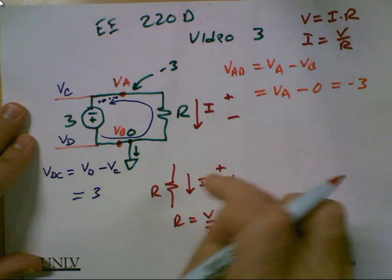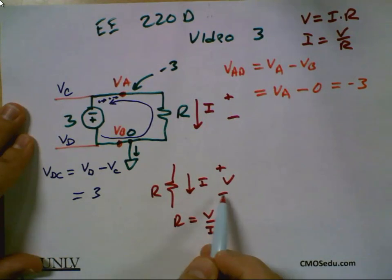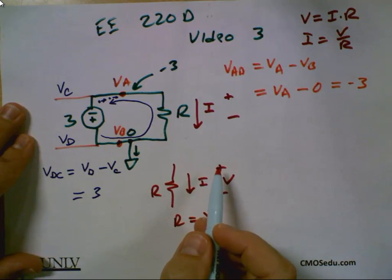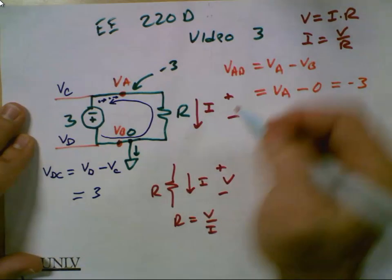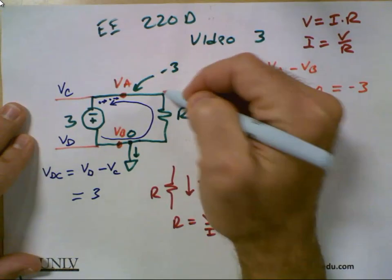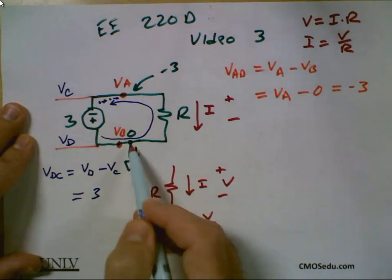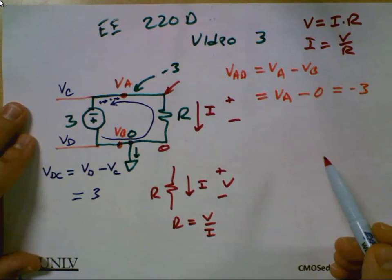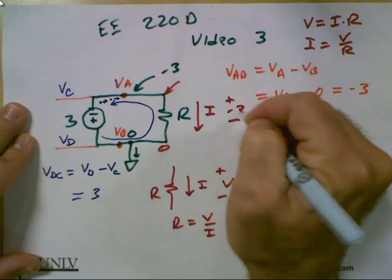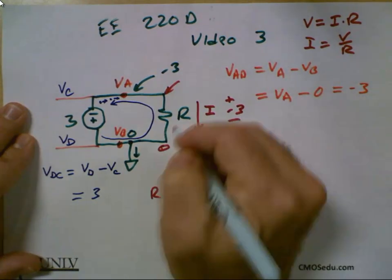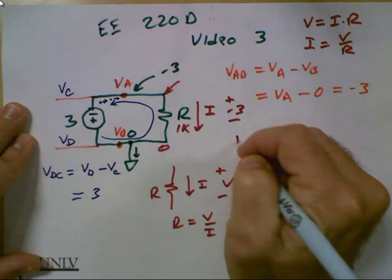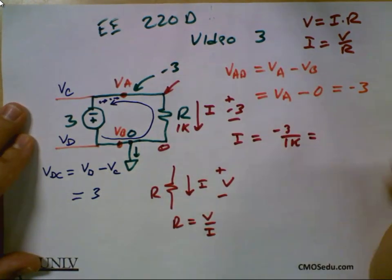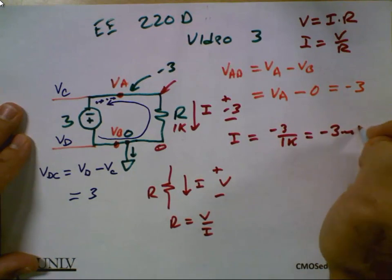You see how the tail or the head here goes to the minus and this side goes to the plus? So what is the voltage VA minus VB? This one's always ground, so it's basically what is the potential here — minus three. So what is the current? Let's say this is 1K. I equals minus three volts over 1K, which is minus three milliamps.